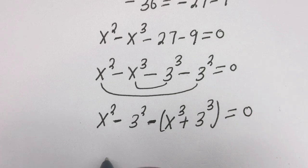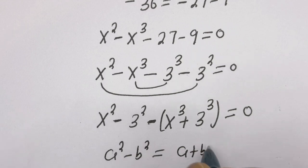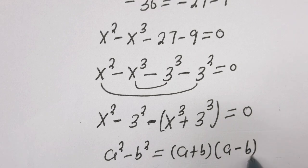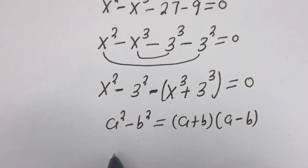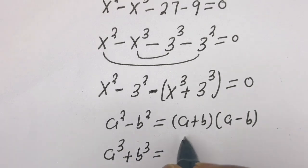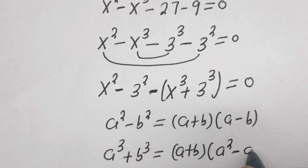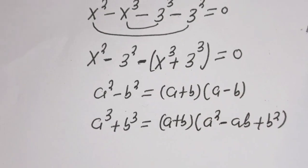The important note here is that if you have a squared minus b squared, this is equal to a plus b bracket a minus b. And if you have a to the power of 3 plus b to the power of 3, this is equal to a plus b bracket a squared minus ab plus b squared.